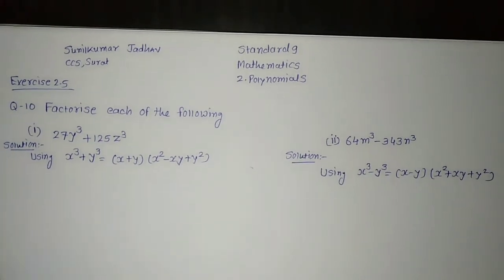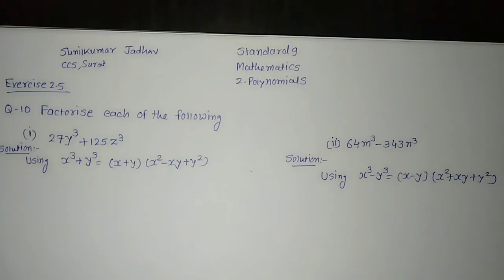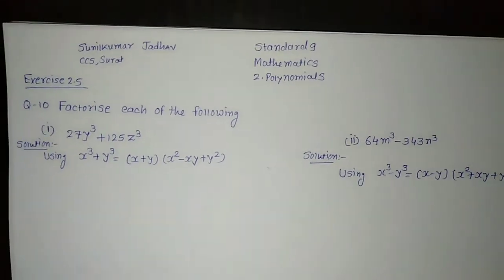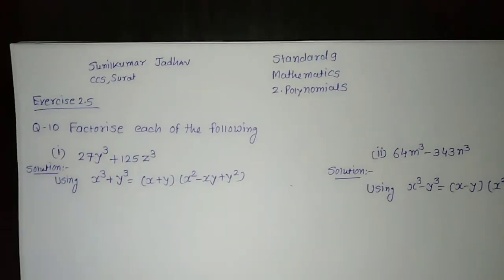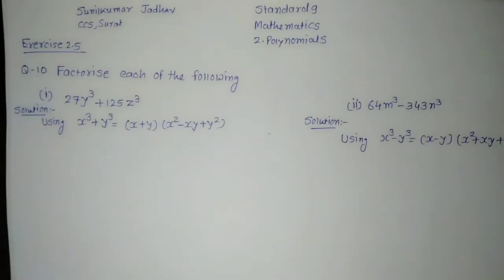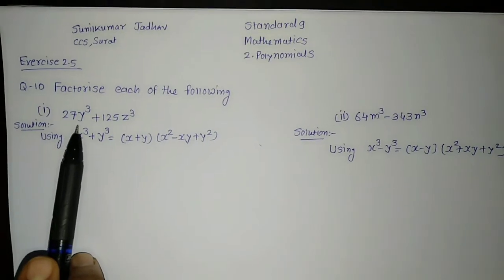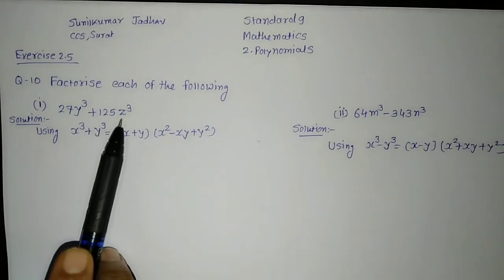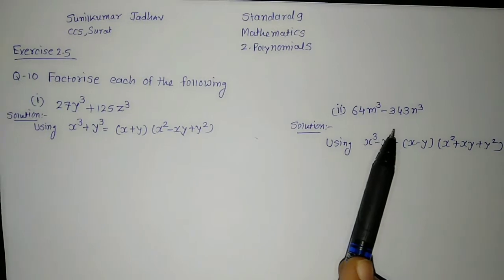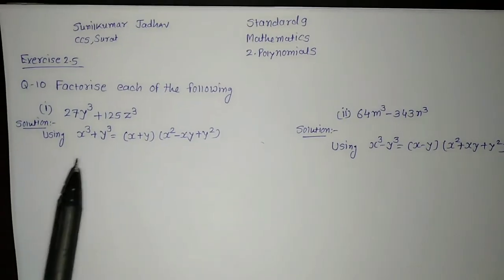Hello friends, my name is Sunil Kumar Jadav. I am principal of C.C. Shah Sarvajanik English High School. Welcome back to my channel. Standard 9, Mathematics, chapter number 2, polynomial, Exercise 2.5, question number 10. That is, factorize each of the following: 27y cube plus 125z cube and 64m cube minus 343n cube. Let us begin with question number 1.